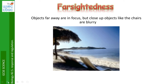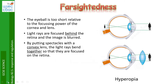If you are far-sighted, objects far away seem to be in focus — so we can see the island in the distance is in focus — but close-up objects like the chairs are blurry. Farsightedness is also called hyperopia.